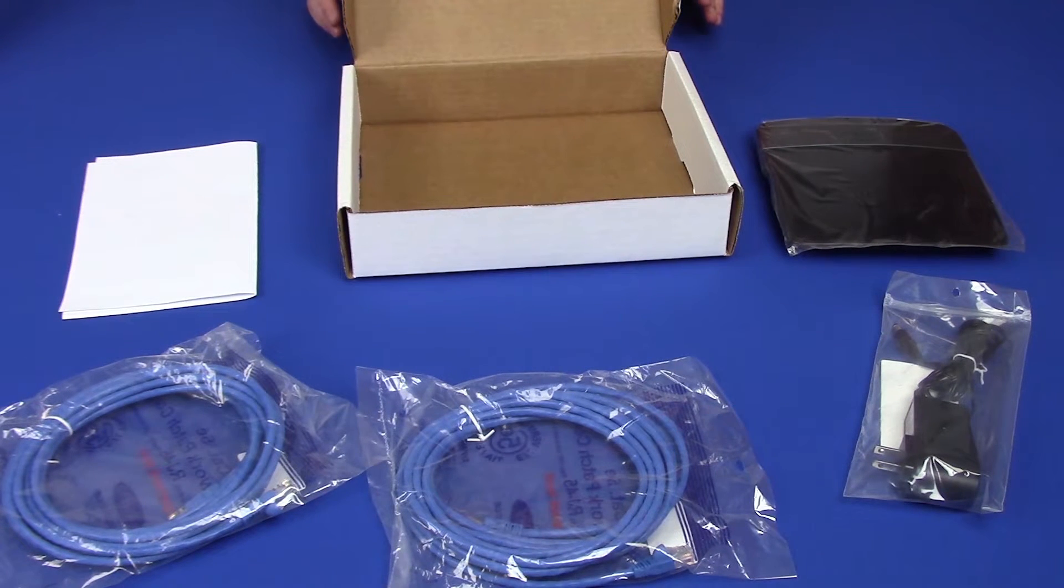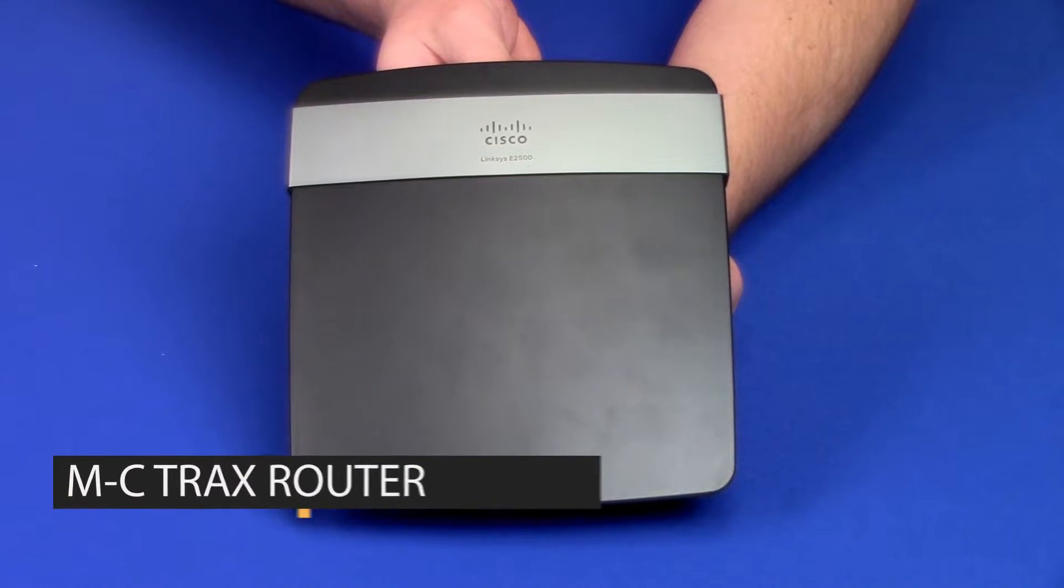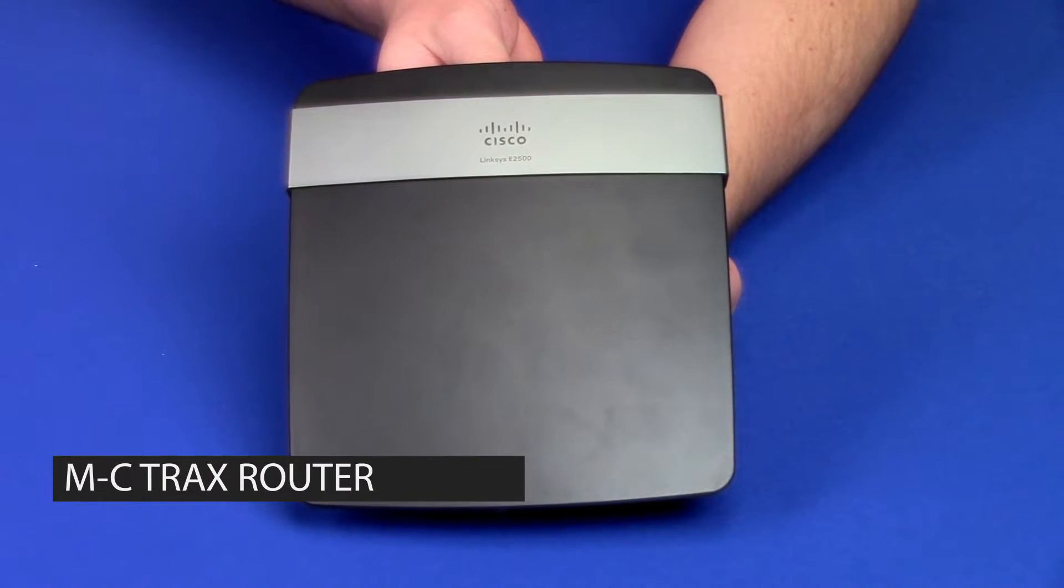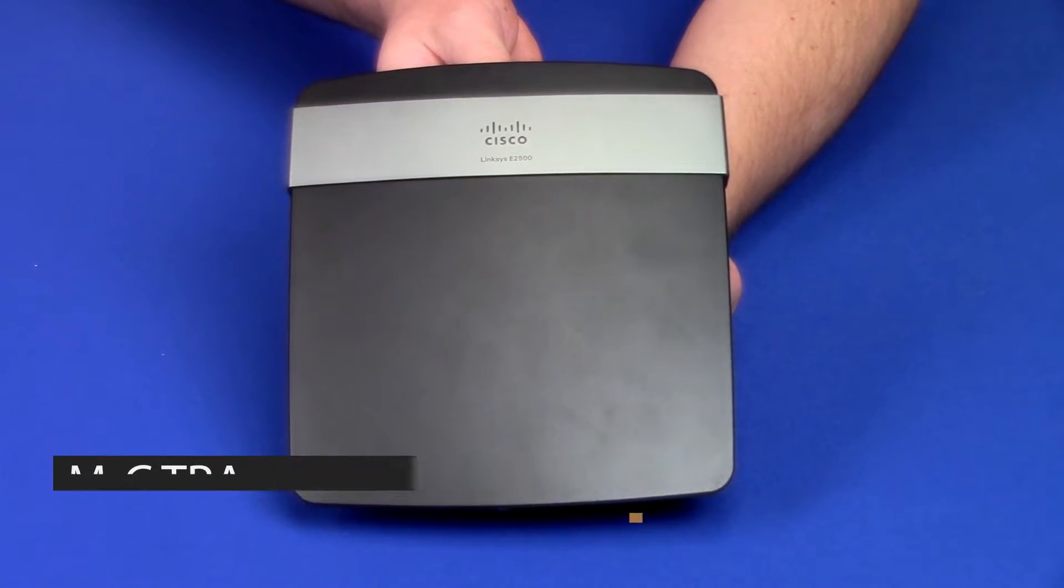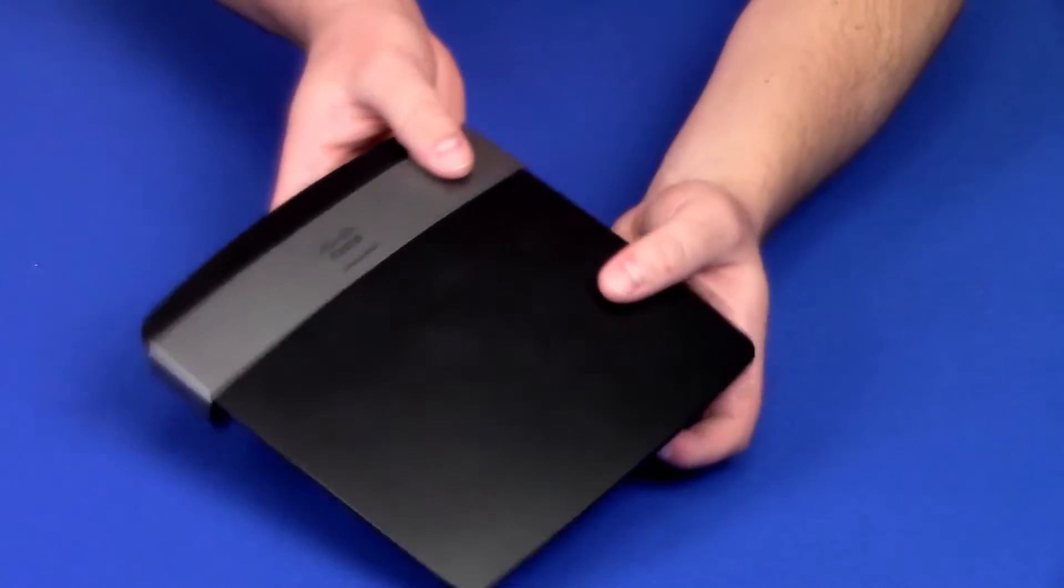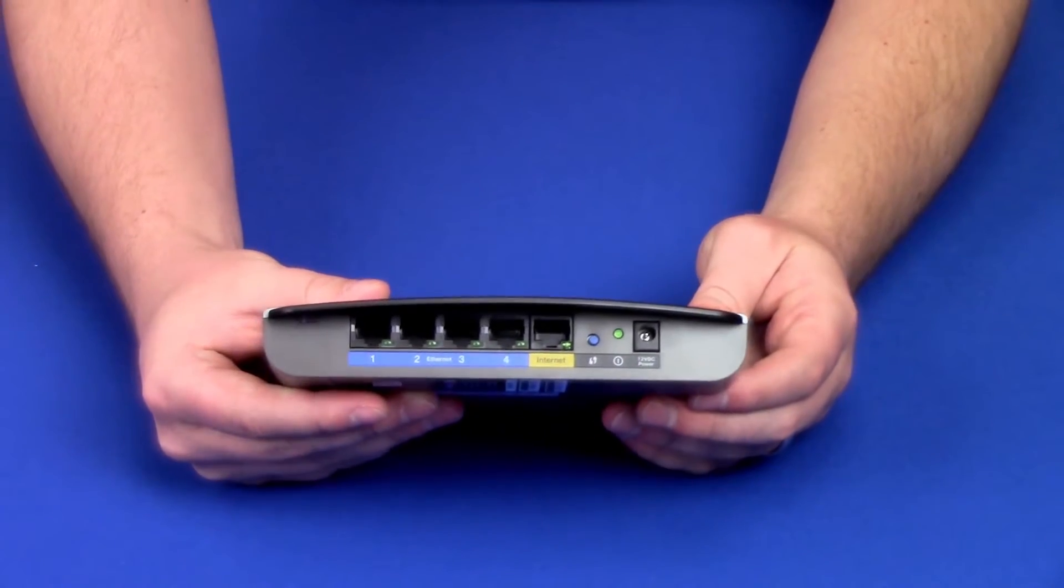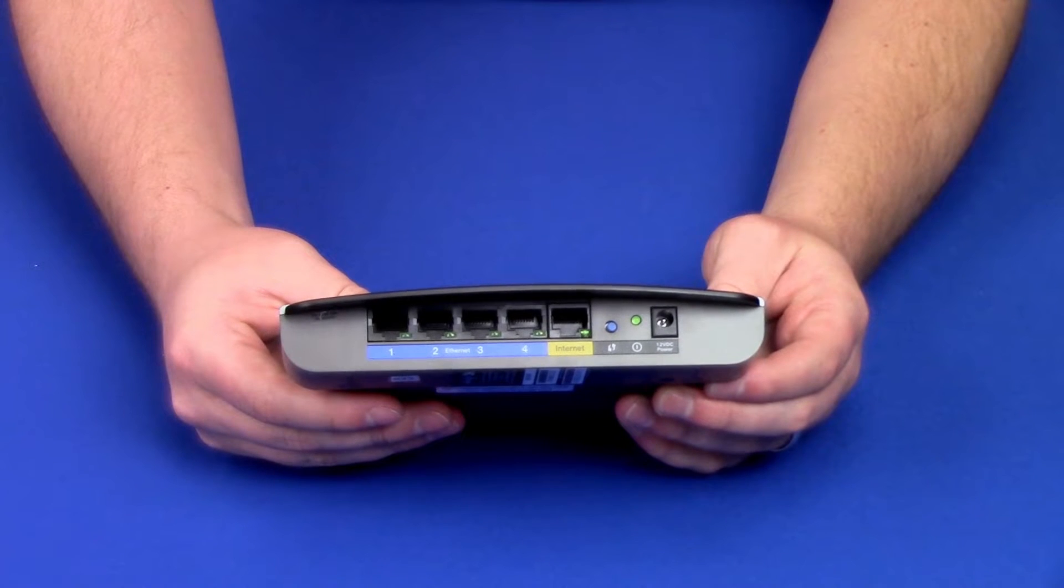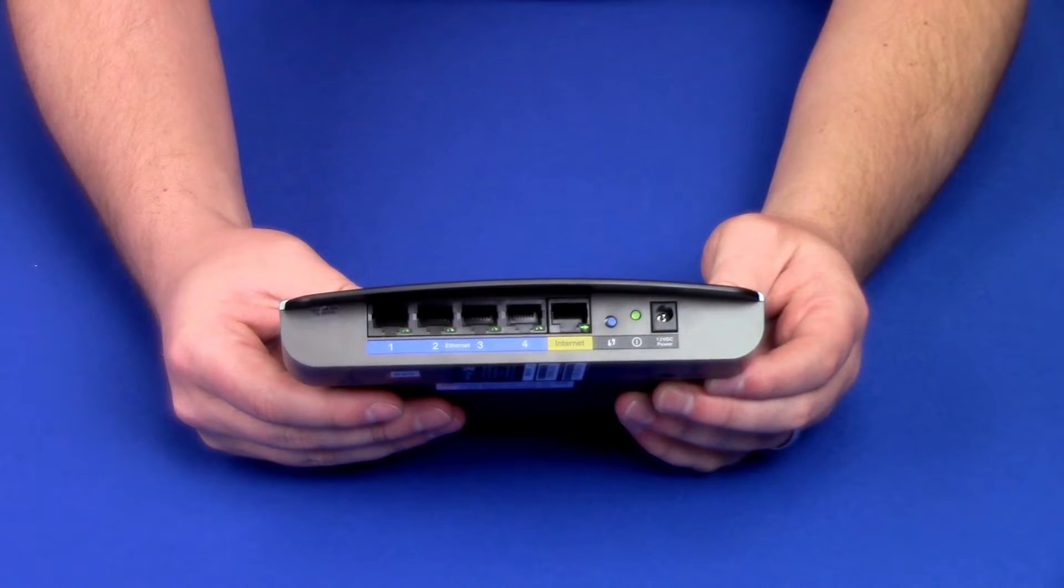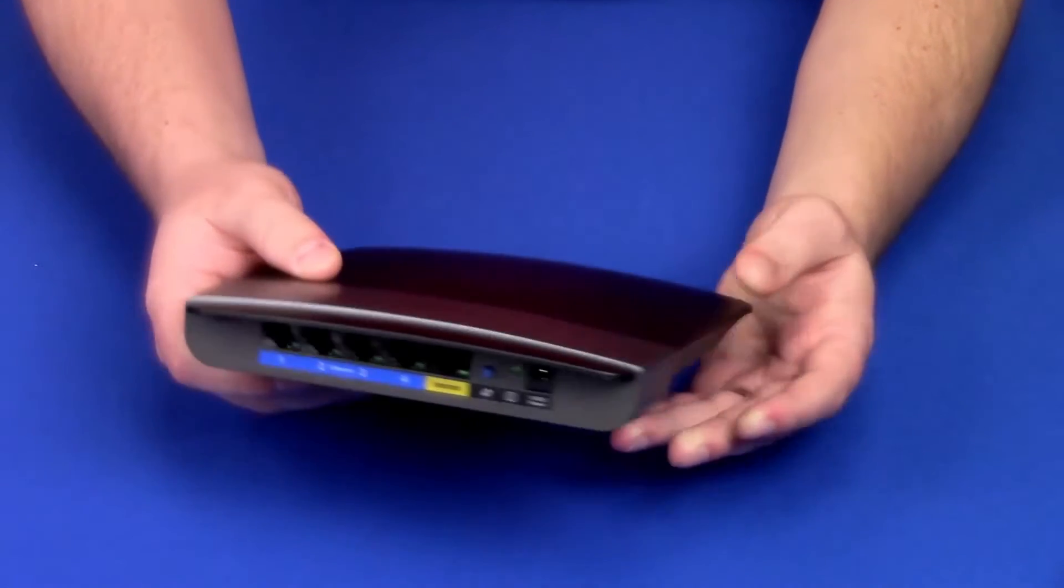Now let's take a closer look at each of these components. First we have the router. This is a modified router that's been pre-installed with software specific to your machine. It's important not to hit the reset button on the back. Doing so will wipe that custom software off, and you'll have to send it back to us so we can reprogram it.